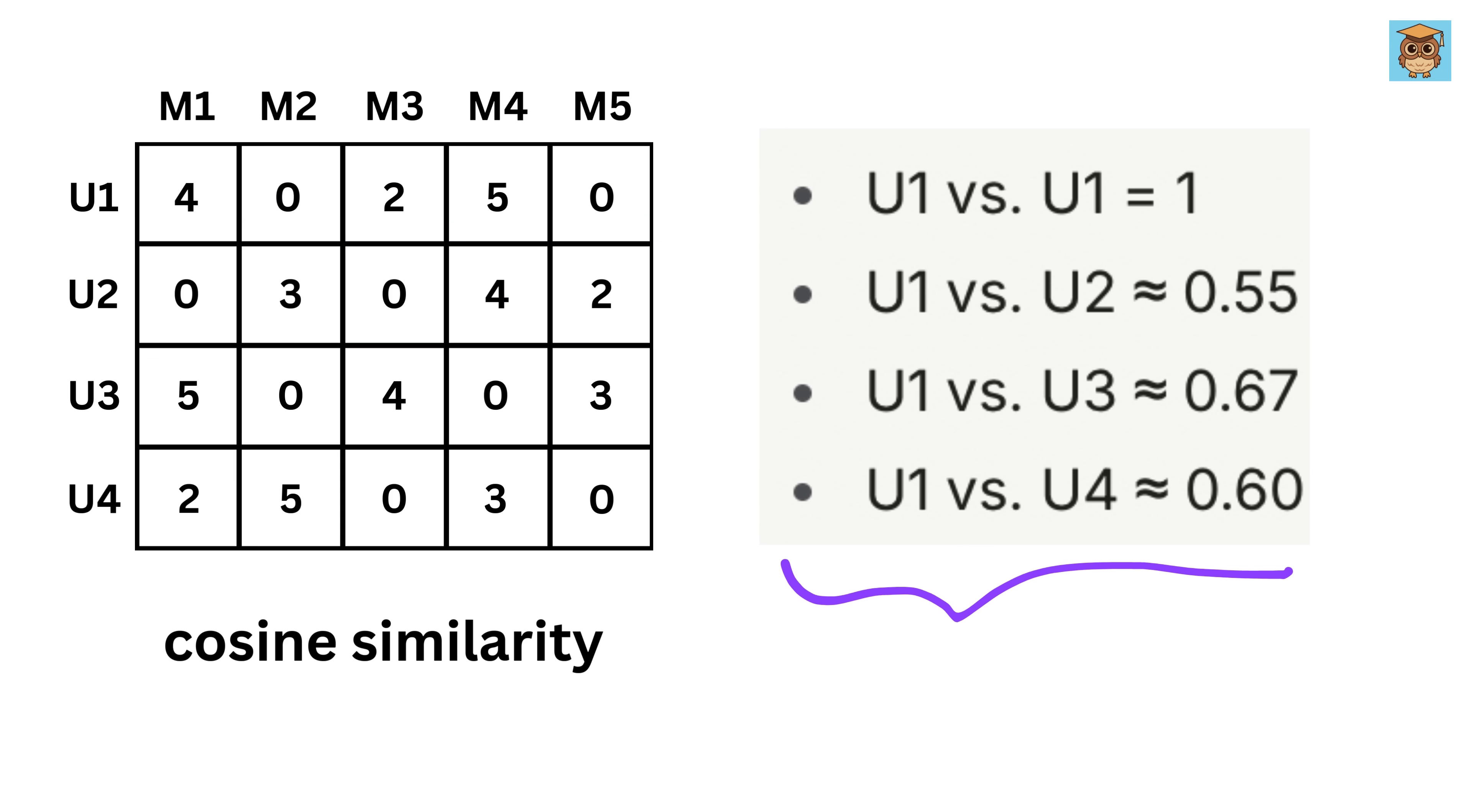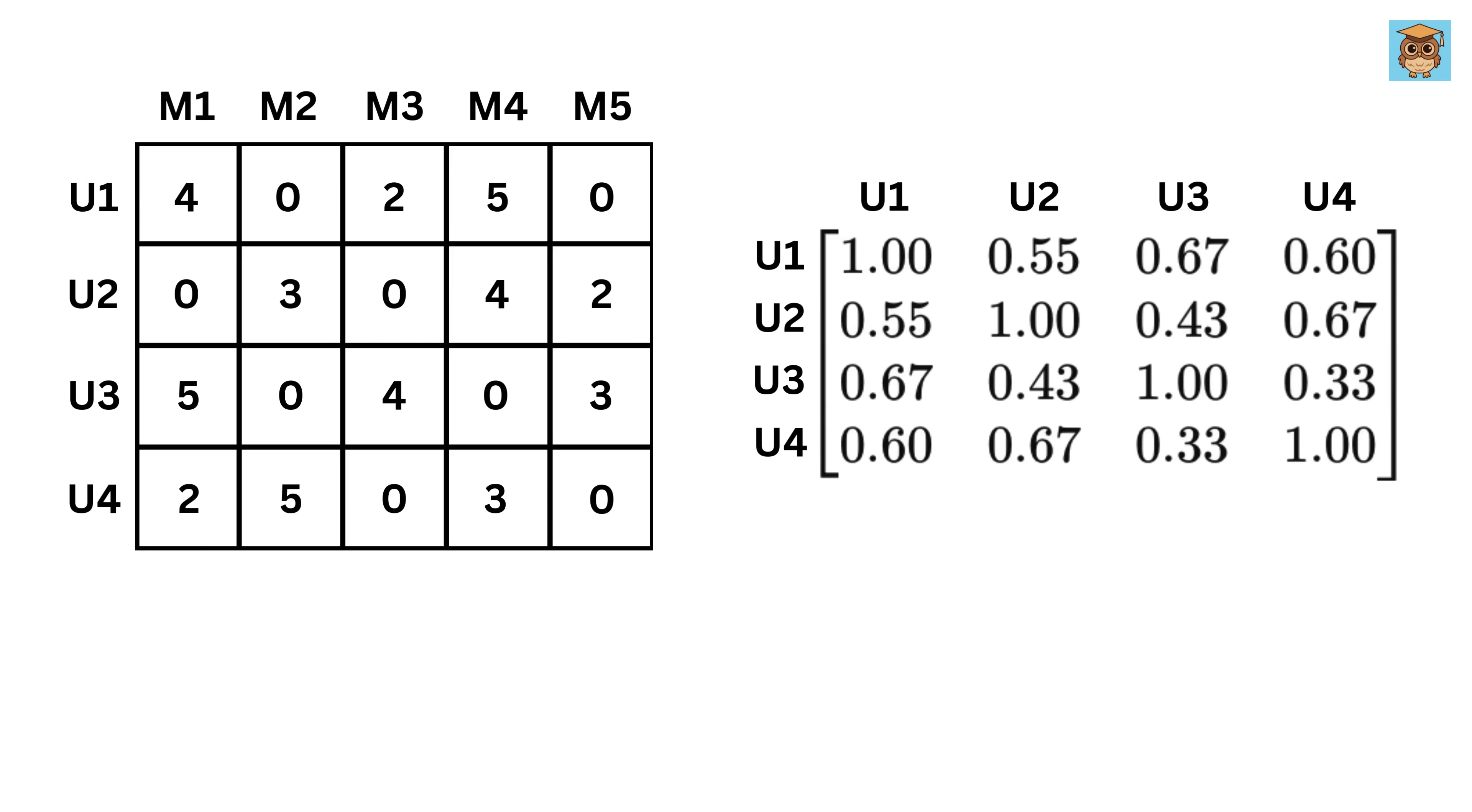Similarly, we can compute the similarity between other pairs of users and make a four by four matrix like this, which we also call a similarity matrix for users. Any value inside it will tell us how similar two users are based on their preferences. Like this row represents user two and this column represents user three, and thus this value equals the similarity between user two and three.